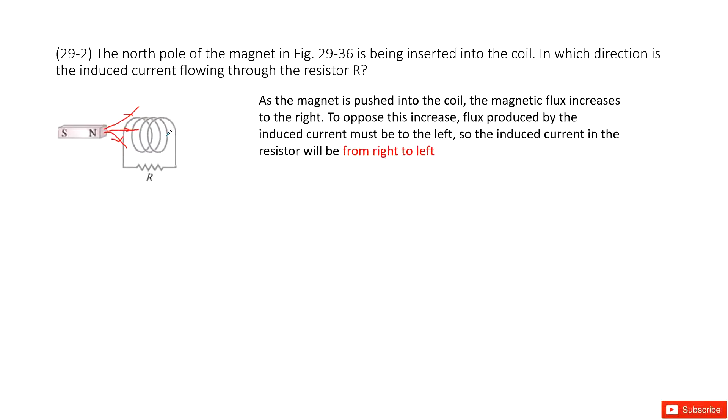And then from Lenz's law it tells us we will compensate this change. So that means the magnetic field produced by this coil is in the opposite direction. Because it increases, we don't want it to increase so much. So we will have the magnetic field from the induced coil this way.